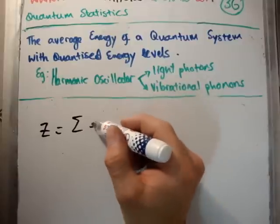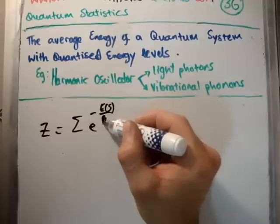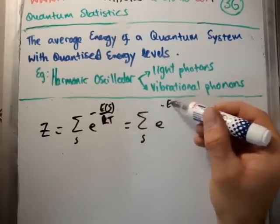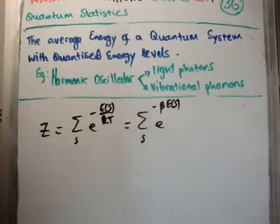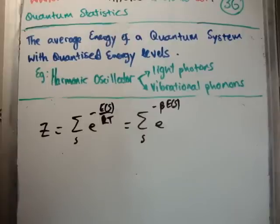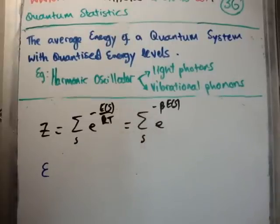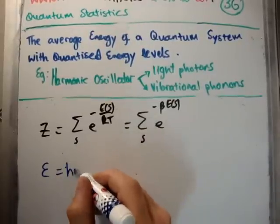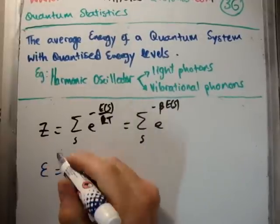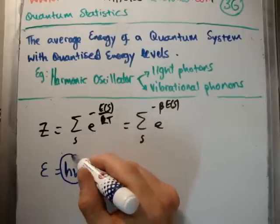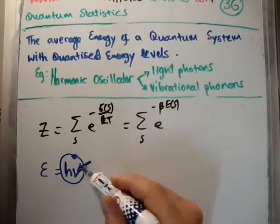The partition function Z is the sum of the Boltzmann factors e^(-E_s / kT), or written in terms of the thermodynamic beta: Z = Σ e^(-β·E_s). We assume the energy levels are quantized in units of epsilon, where epsilon is h·ν — h is Planck's constant and ν is the frequency of vibration. Einstein assumed a single characteristic frequency at which all harmonic oscillators vibrate.